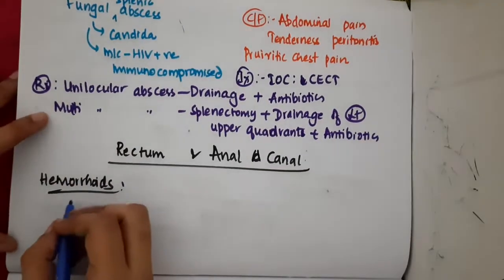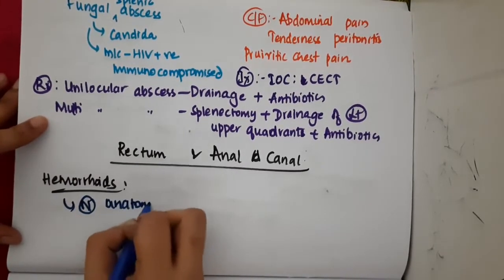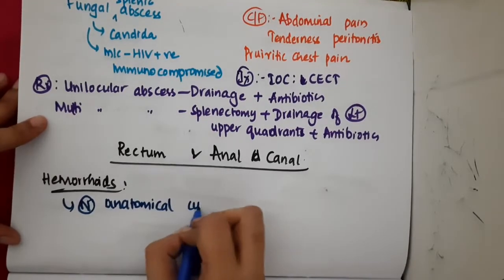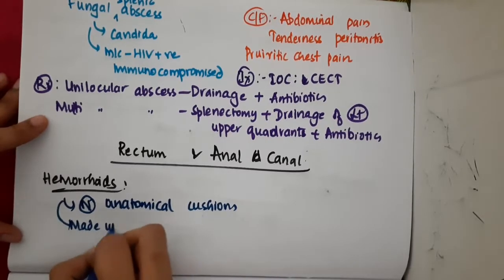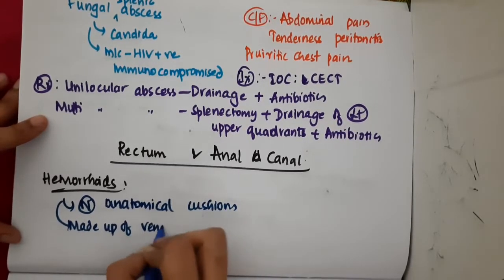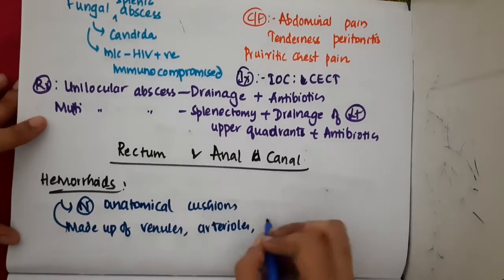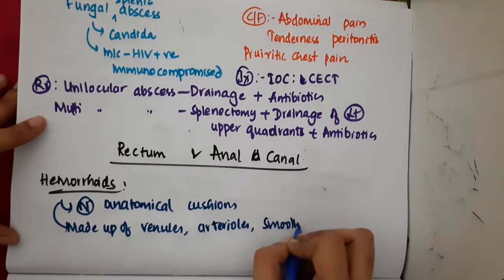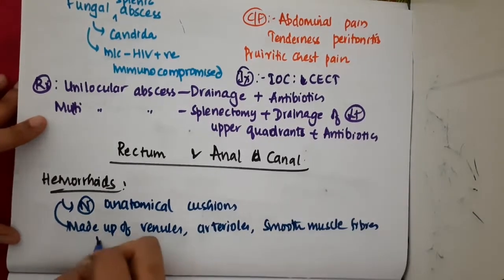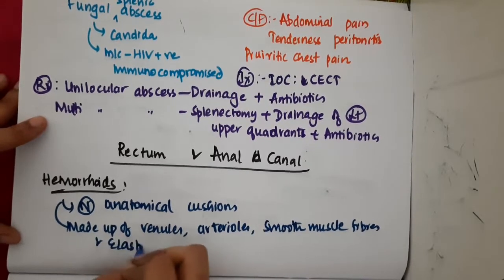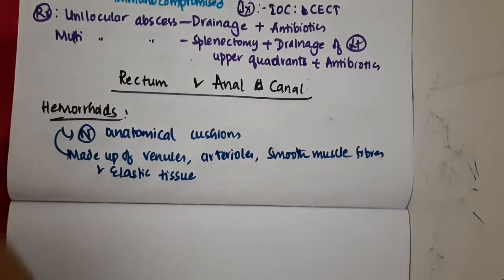What are hemorrhoids? Hemorrhoids are actually normal anatomical cushions. They are made up of venules, arterioles, smooth muscle fibers, and elastic tissue.